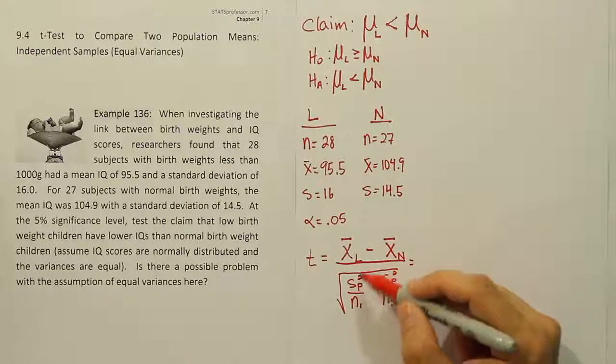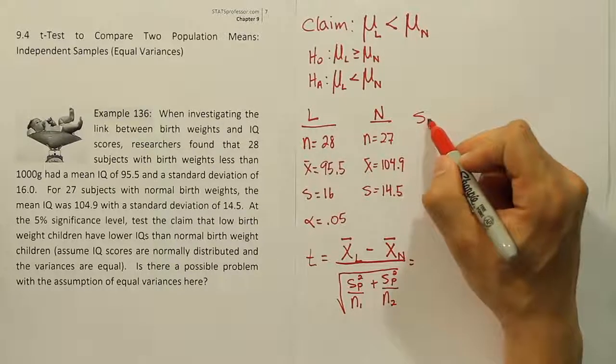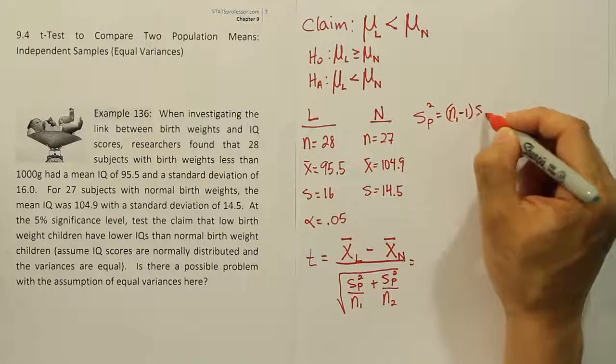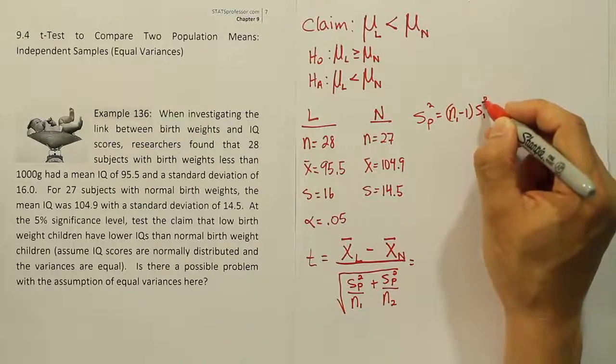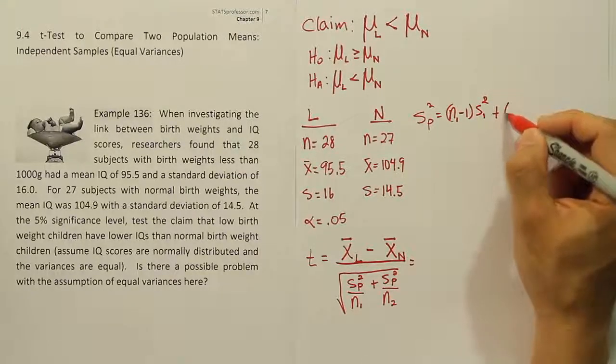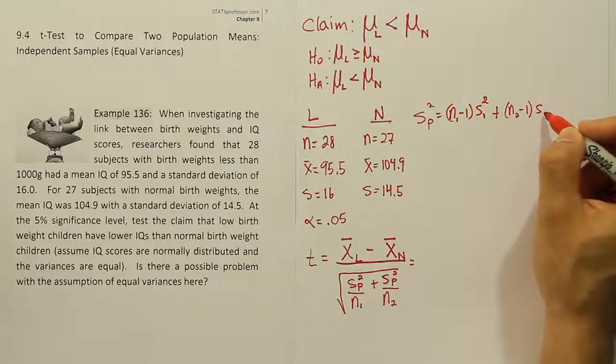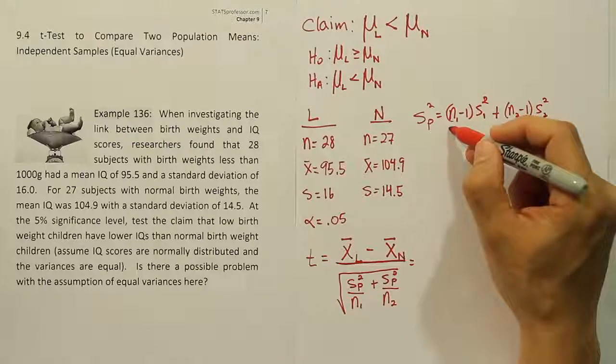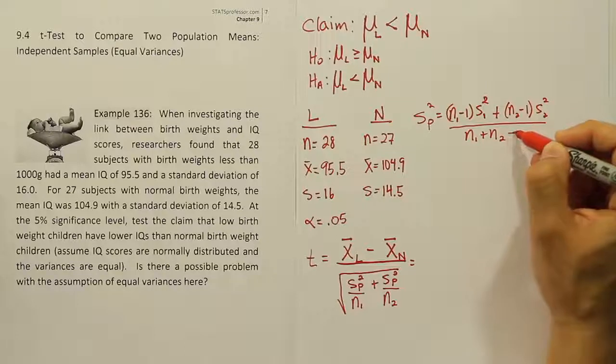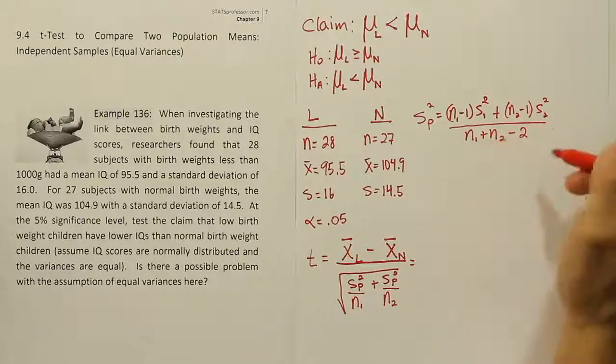From there, clearly I'm going to need this pooled estimator. So I might as well take the time out to calculate it now. Remember that this estimator has the following structure. It's the degrees of freedom for the first group times its variance squared - sorry, not its variance squared, its standard deviation squared, or its variance in other words. Plus the degrees of freedom for the second group times its variance. And then lastly, we divide by the degrees of freedom, which is just N1 plus N2 minus 2. Or you can write N1 minus 1, N2 minus 1. That's the same thing with a plus sign between them.